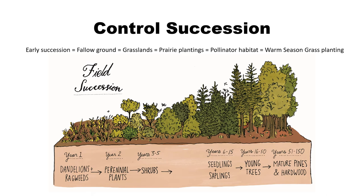When talking about managing native warm season grass plantings, we're really talking about this early successional plant community. These plantings include grass species such as big bluestem, little bluestem, Indian grass, side oats grama, and switchgrass, plus a diverse wildflower component. The early successional process — dandelions and ragweeds — provides important wildlife food sources, and over time progresses through perennial plants into a shrub stage with blackberries and dogwoods, then windblown tree species like cottonwoods, ash, maple, and elm, and finally mature pines and hardwoods.